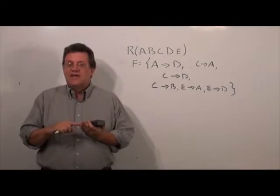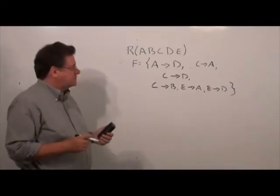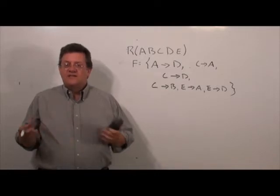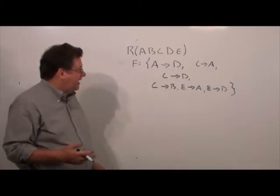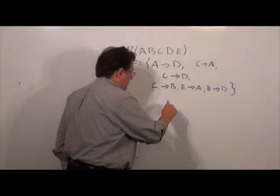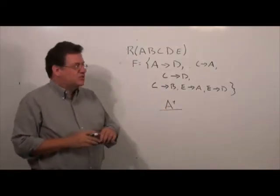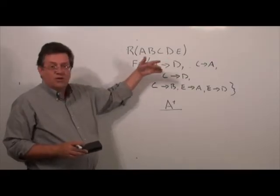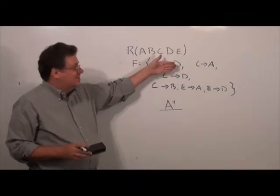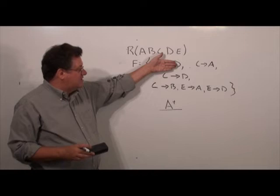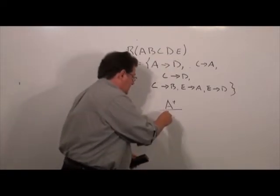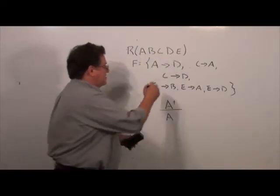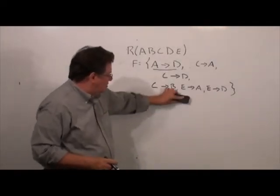The third step is to check for redundant functional dependencies. We take each functional dependency one at a time and figure out whether we need it. For A → D, we compute A closure pretending that functional dependency doesn't exist. If A closure contains D, we don't need it. By reflexivity A closure has A, but there's no way to reach D without A → D, so we need to keep this functional dependency.